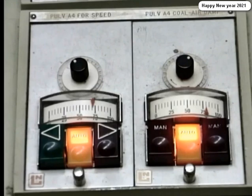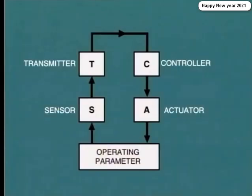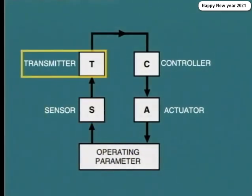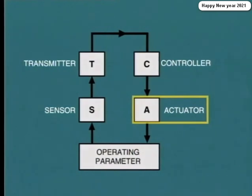Modern automatic control systems have been developed to a high degree of precision and can provide excellent results in maintaining a high level of efficiency, reliability, and safety. This schematic shows the essential components of a control loop. They are the sensor, transmitter, controller, and actuator.